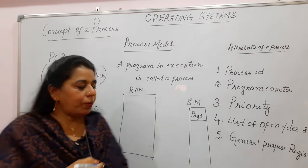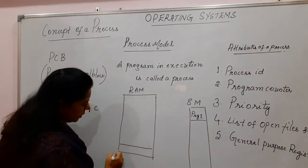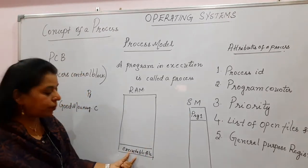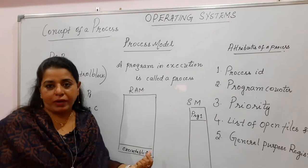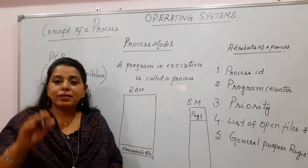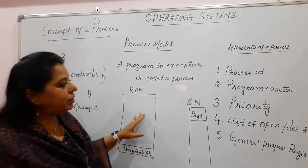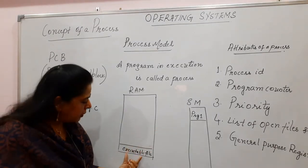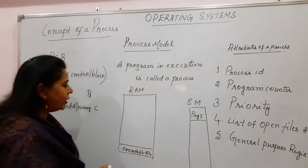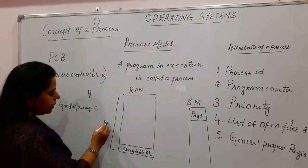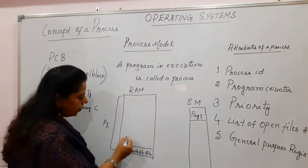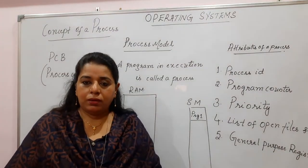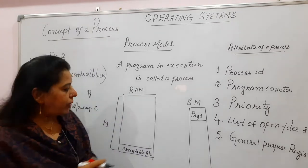That high-level language program becomes an executable file — for C language, it becomes a dot-out file. This executable file is placed in the RAM. Along with the executable file, some additional information about the program must also be included in the main memory, covering the different attributes of that process. Once the program is moved as an executable file into the RAM, we call it a process, so this address space is meant for process P1, which stores all the different attributes — variables, dynamic allocations, and so on.